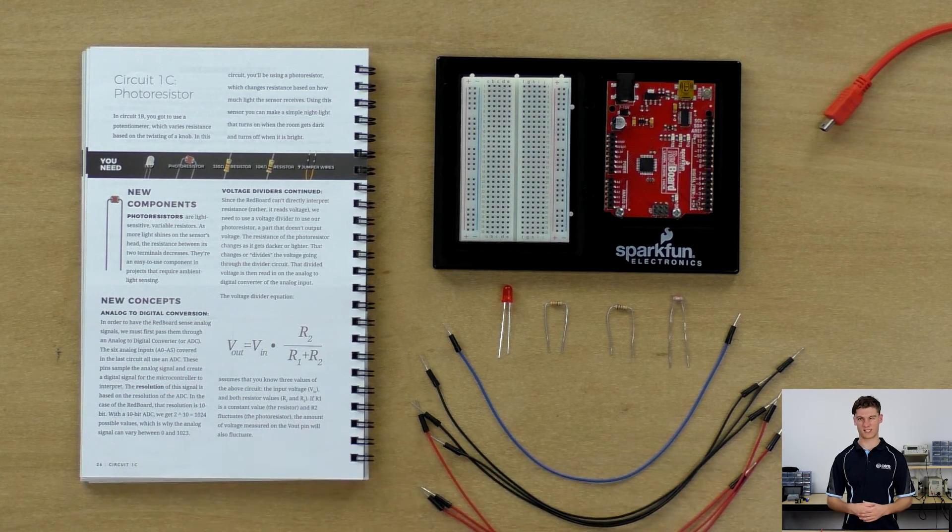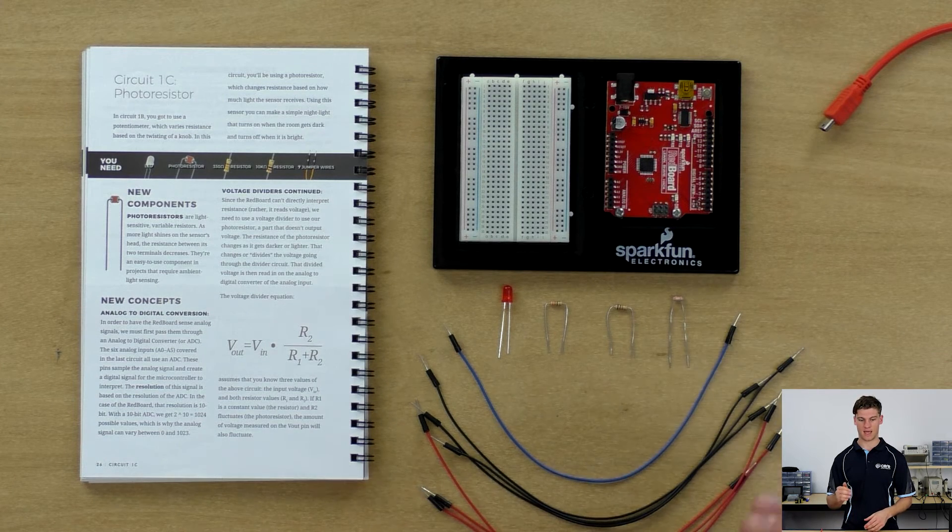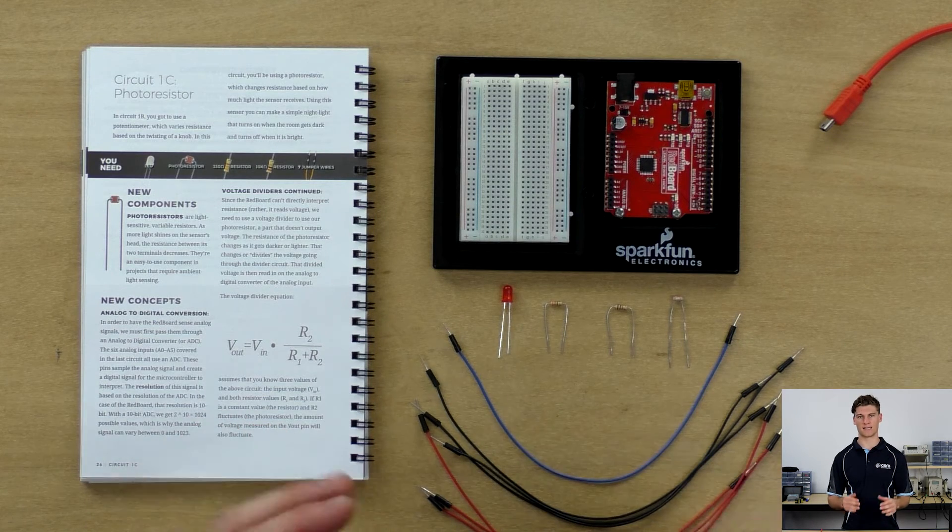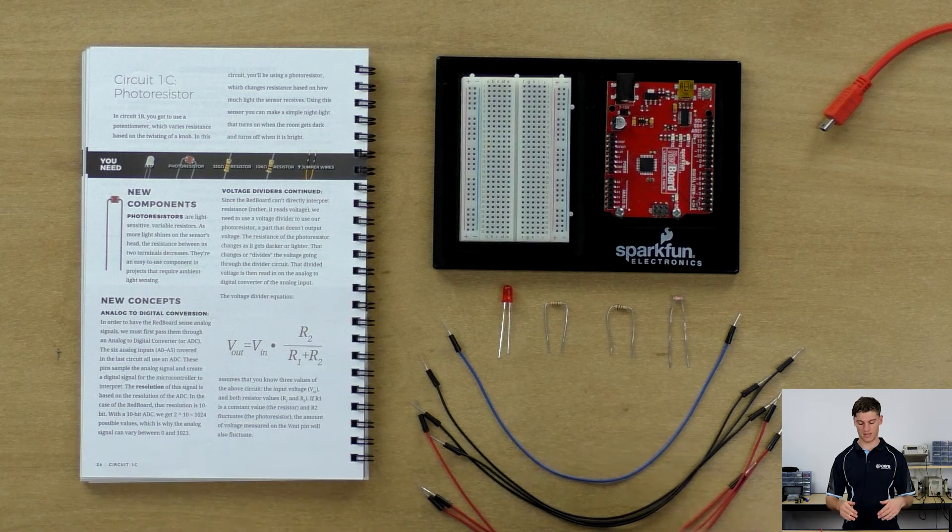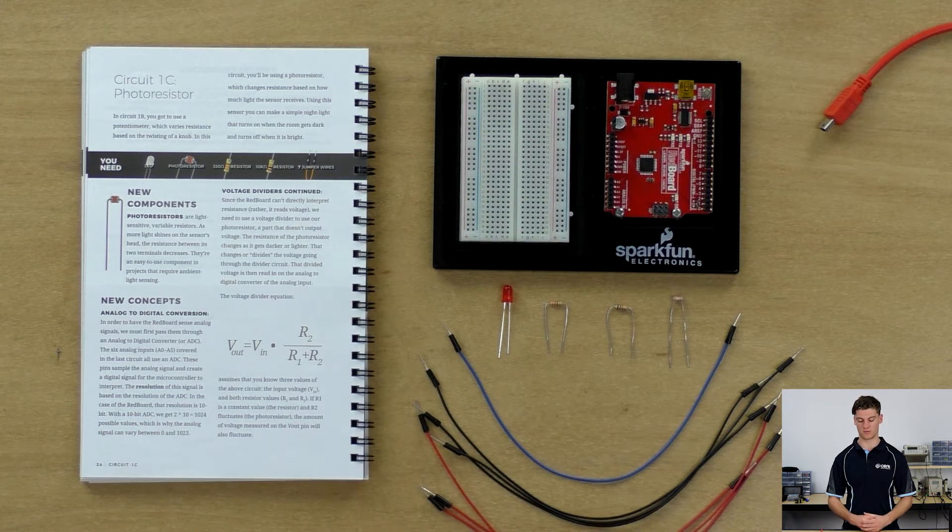So what we're essentially making in this circuit is a nightlight. If the light intensity in the room is below a certain threshold the LED will turn on, and if it's above a certain threshold the LED will stay off.